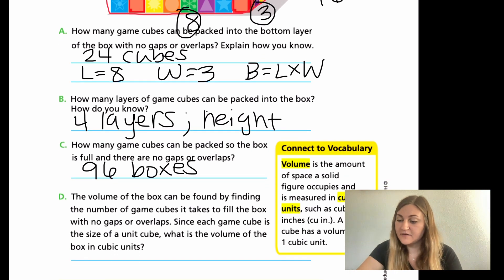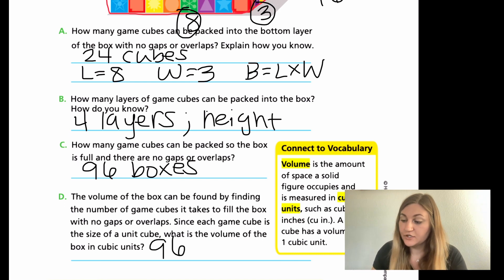And then D, the volume of the box can be found by finding the number of game cubes it takes to fill the box with no gaps or overlaps. Since each game cube is the size of a unit cube, what is the volume of the box in cubic units? Here's where it's a little bit different because it doesn't give us inches, millimeters, feet. This is just cubic units. This is where we're practicing. So what we want to write here is we know the answer is 96, but it's 96 cubic units. The way that you write this is with a U and the exponent is a 3. The 3 is a cubic, to where if it were 2, it would be squared.